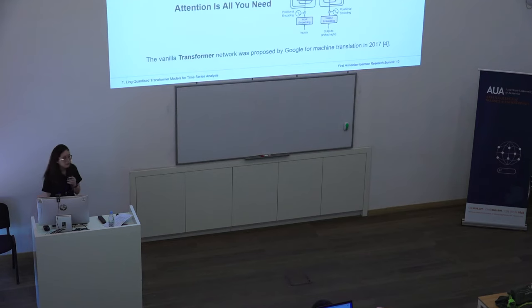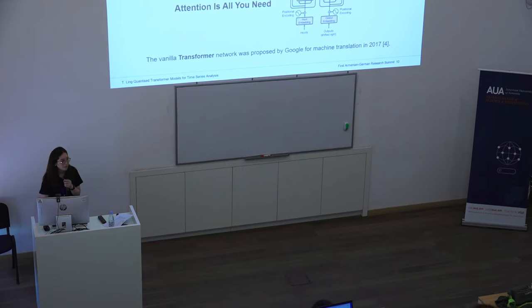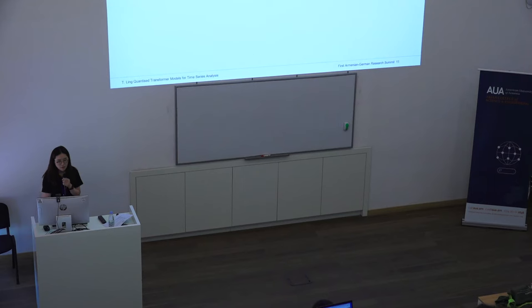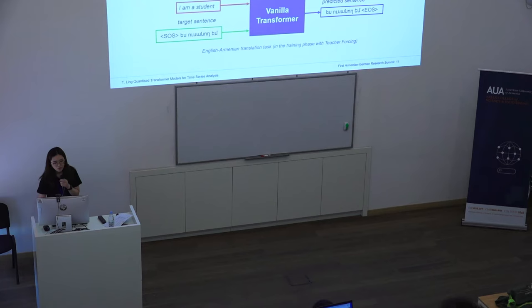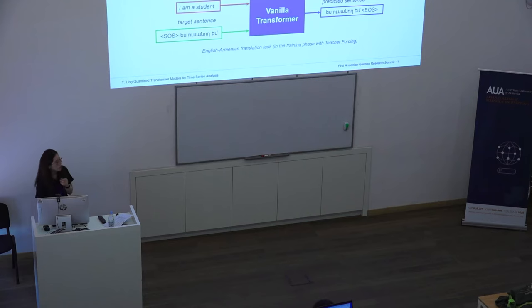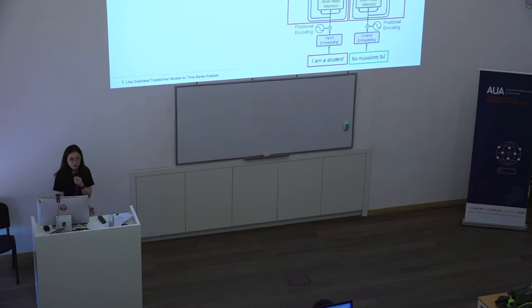I'd like to introduce the transformer network. You might be familiar with the recently popular ChatGPT — it actually originates from the transformer network. The vanilla transformer network was introduced by Google in 2017 for machine translation tasks. Viewing the transformer model as a single entity, specifically in an English-to-Armenian translation task, it takes an English sentence as input and generates a corresponding Armenian translation as output. During training, the model is also given the target sentence as input — this is called the teacher forcing method, which helps speed up learning and improve translation quality.